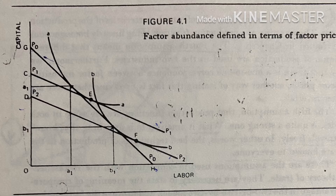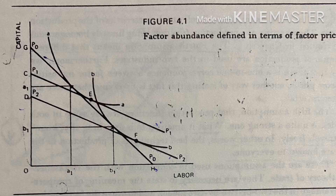We can express the cost of producing one unit of A in terms of capital alone or labor alone. Doing so, we find that the cost of producing one unit of A is OG measured in terms of capital, or OH measured in labor. The next step is to find out the cost of producing one unit of each good in country two. The only information we have about country two is that capital is relatively more expensive than in country one.